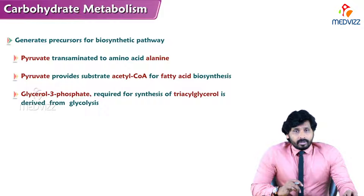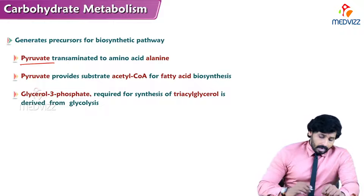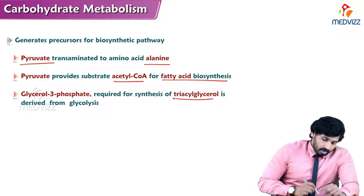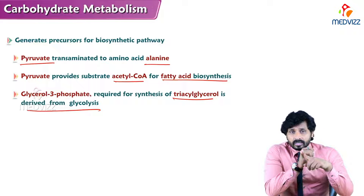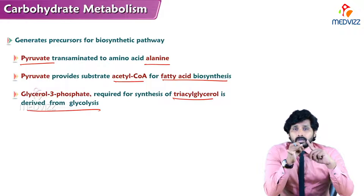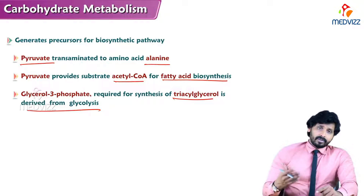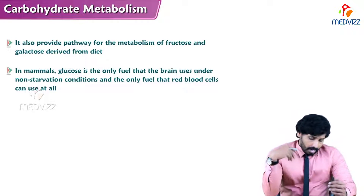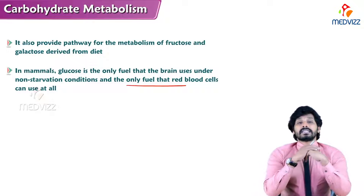Pyruvate is the ultimate end product of glycolysis and is a precursor for: alanine via transamination (for protein synthesis), acetyl-CoA for fatty acid biosynthesis, and glycerol-3-phosphate for triacylglycerol synthesis. Glycolysis also provides the metabolic pathway for fructose and galactose from the diet. In mammals, glucose is the only fuel the brain uses under non-starvation conditions and the only fuel red blood cells can use.